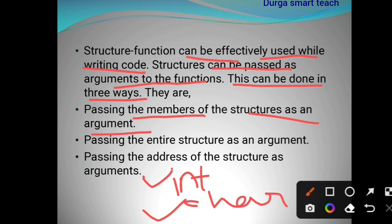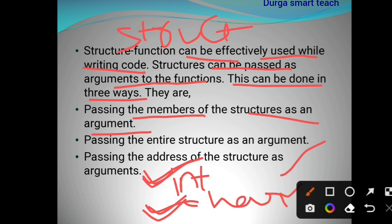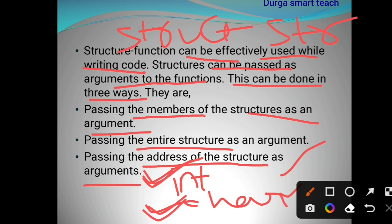The three ways are: first, passing the members of the structure as an argument — for example, int, char, float, or double, passing only one member at a time. Second, passing the entire structure as an argument — using the struct keyword followed by the structure name. Third, passing the address of the structure as an argument. So we can pass members, the whole structure, or the address of the structure.